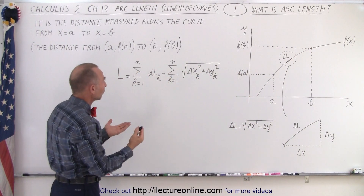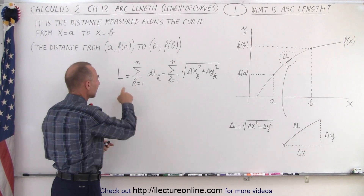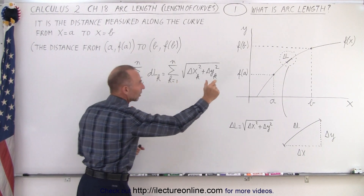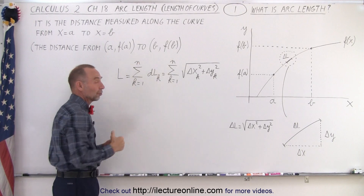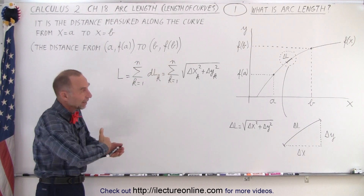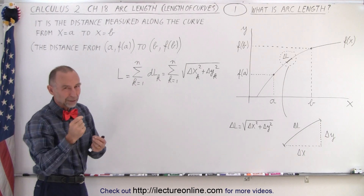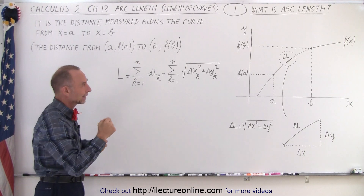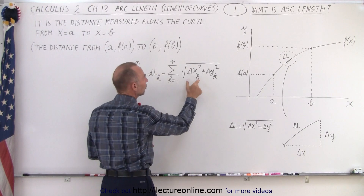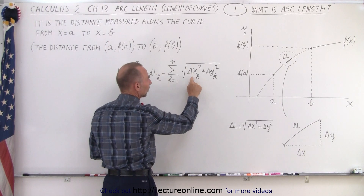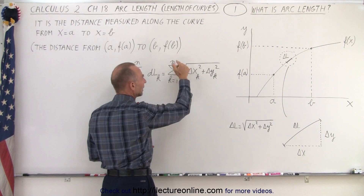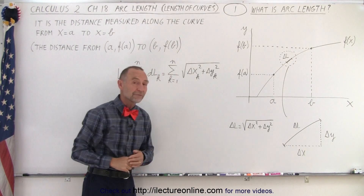We want to say that the length of the curve is equal to the sum of all the little sections — however many sections there are, let's say n sections. Of course, when n goes to infinity, that's when you have integration, and that's when you get the exact length of that curve. So we can simply say it's the sum of all the square roots of delta-x squared plus delta-y squared, from k equals 1 to n, and then in the end, going to infinity. That's the concept of arc length — we can also call it the length of the curve.